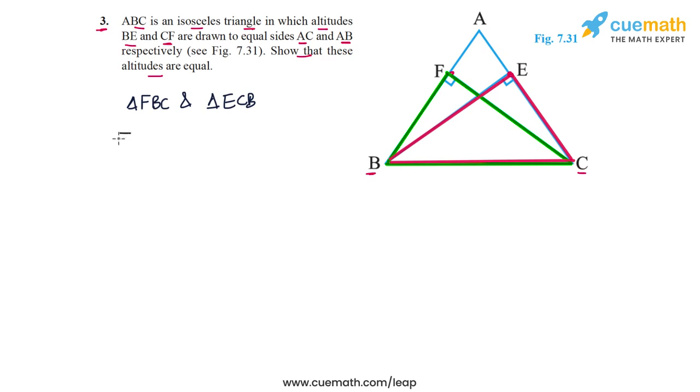In these two triangles, one thing we note is that these two angles are equal—the angles at F and E—because both of them are 90 degrees. So angle BFC is equal to angle CEB because both are equal to 90 degrees.